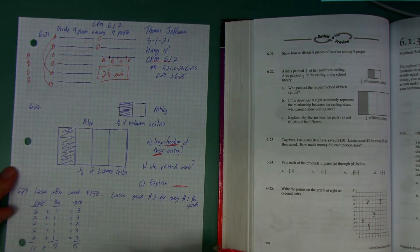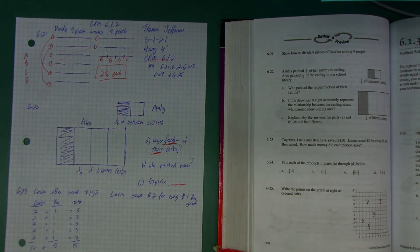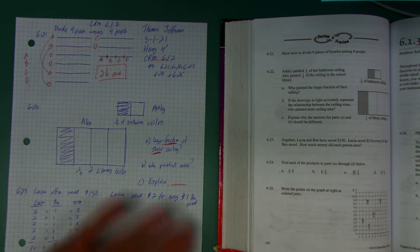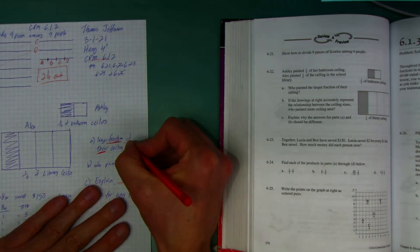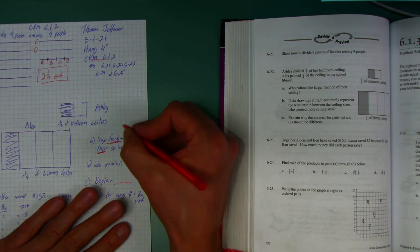As far as Ashley and Alex painting, I think you can agree that one-half of something is more than one-fourth, so Ashley painted a larger fraction of her ceiling that she was painting.